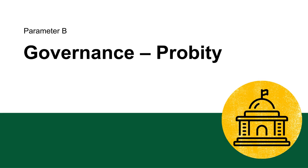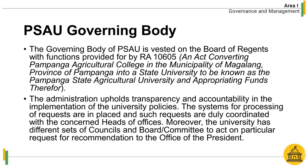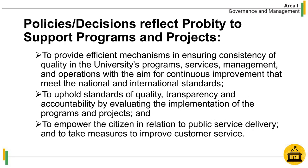Parameter B: Governance — Probity. The governing board of PSAU is vested on the Board of Regents with functions provided for by RA 10605. The administration upholds transparency and accountability in the implementation of university policies. Policies or decisions reflect probity to support programs and projects to provide efficient mechanisms in ensuring consistency of quality in the university's programs, services, management, and operations with the aim for continuous improvement that meets national and international standards.